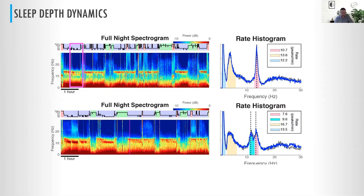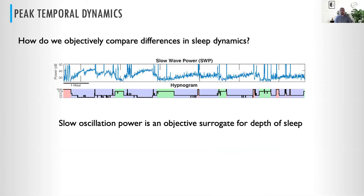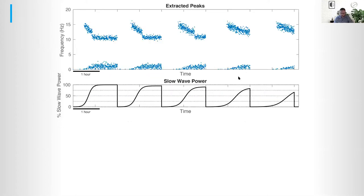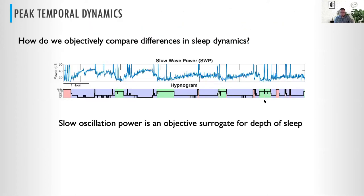Maybe this is just a function of dynamics. What we want to do now is track how these change in terms of an objective, continuous-value metric of depth of sleep. Instead of using discrete sleep stages, we want to look at this as a continuum — because in every way shape and form, sleep has been shown to be a continuum. So we go back to the two-process model of sleep and use slow oscillation power as an objective surrogate for depth of sleep, in particular for non-REM sleep. This slow wave power is a direct mirror of the technician-scored hypnogram.